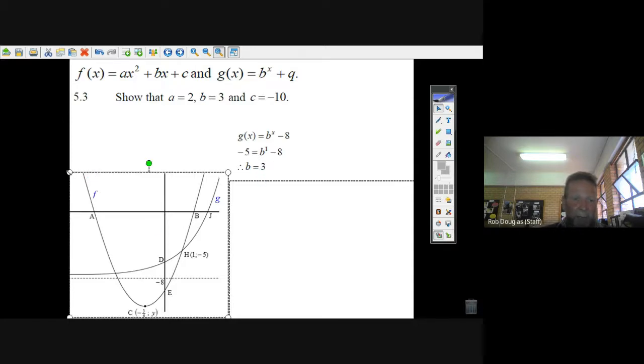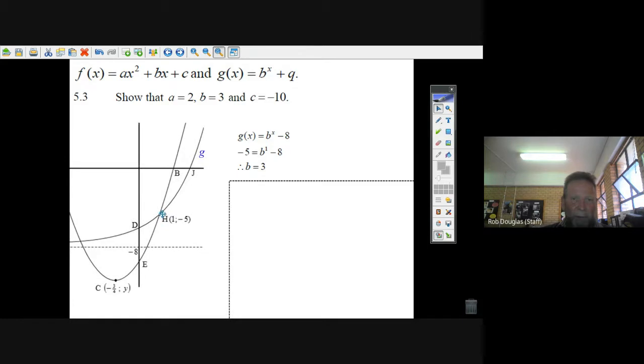But hey, now we've got to try and figure out what a and c are. Well, all we're given is the coordinates of the turning point here. Or sorry, yeah, it's the coordinates are minus 3 over 4 and y. Well, we've got the axis of symmetry there.